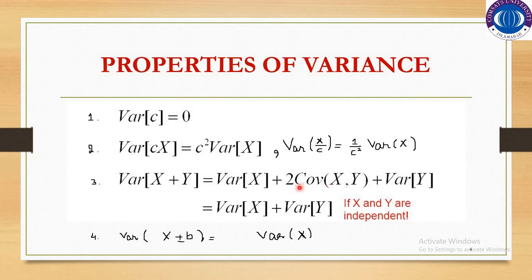Whenever one variable changes, the effect on the other variable is called covariance, and this occurs when x and y are dependent. Co-variation exists when both x and y depend on each other. If both x and y are independent, then the covariation will be zero — x is not affecting y and y is not affecting x, so there will be no combined variation. When x and y are dependent, that is, one variable affects the other, then covariance will exist.